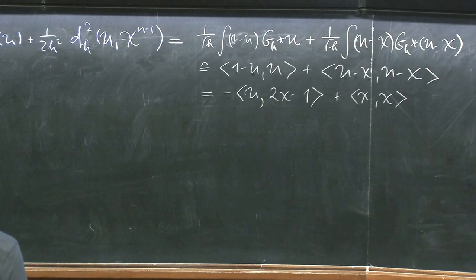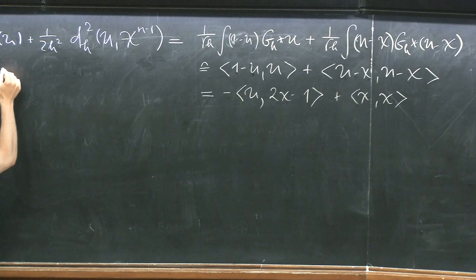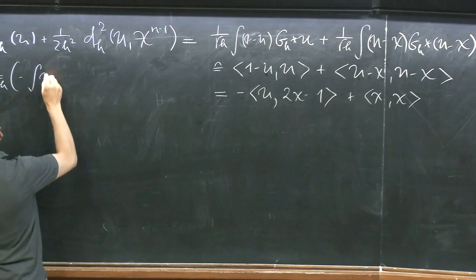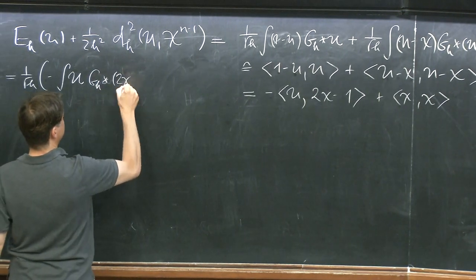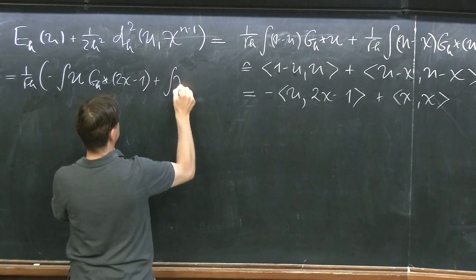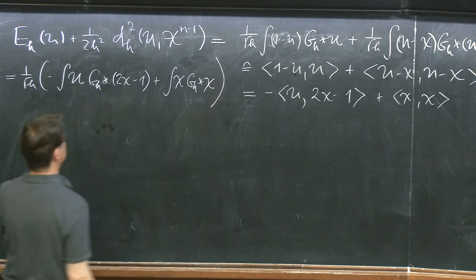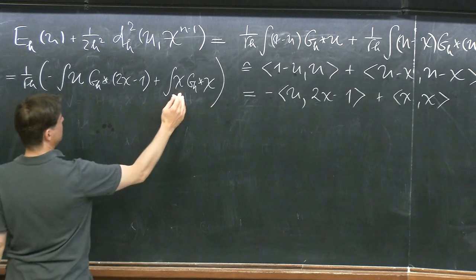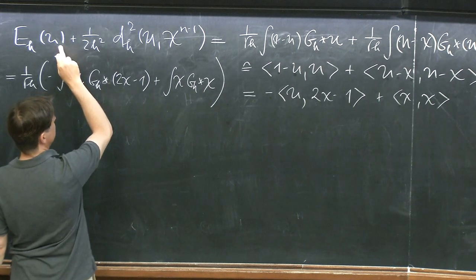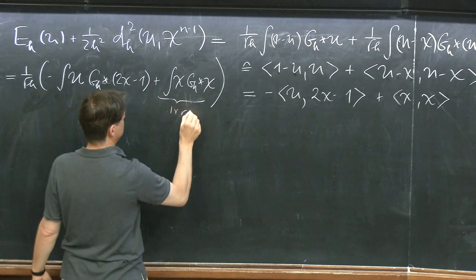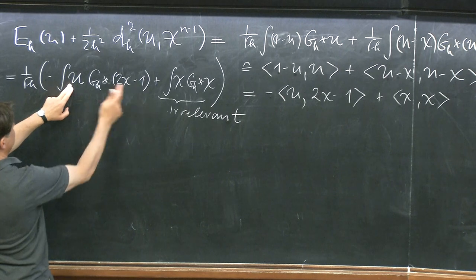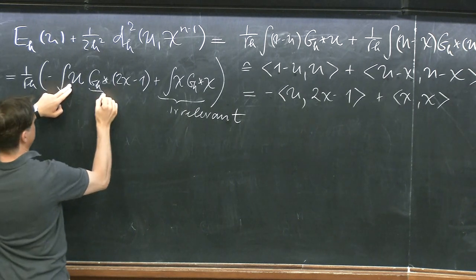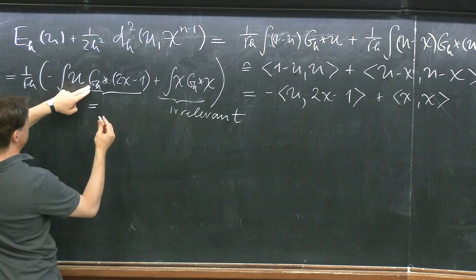Using elementary linear algebra, this can be rewritten as -u(2chi - 1) + chi·chi, where the quadratic terms in u cancel, the quadratic term in chi remains, and the mixed term between u and chi with a minus sign appears. So we have minus the integral of u times g_h convolved with (2chi - 1), plus chi times g_h convolved with chi. The second term is completely irrelevant for this variational problem since it doesn't depend on u.